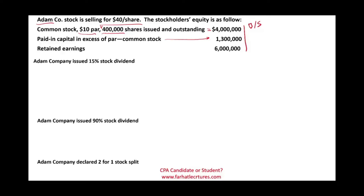In this example, Adam Company will issue a 15% stock dividend, they will also issue a 90% stock dividend, and Adam Company will declare a two-for-one stock split. We are going to look at the journal entries and how we come up with the figures when we need to journalize a stock dividend as well as a stock split.